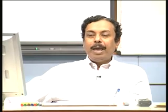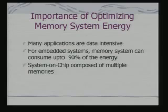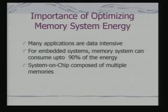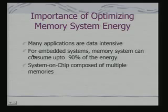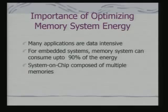Now we look at memory and cache issues related to power. So far we have looked primarily at the processor. Why is optimizing memory system energy important? Many applications are data intensive, requiring memory access for reading and writing data. For embedded systems, some estimates say the memory system can consume up to 90 percent of the energy. System on chip are composed of multiple memories, and this memory consumption is another major source of power drain beyond the CPU.